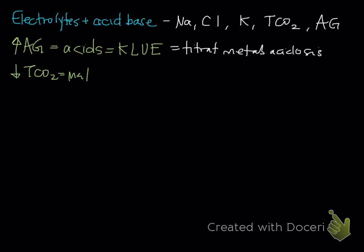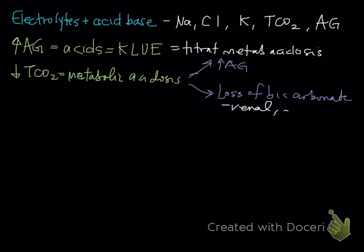Some people start with TCO2 because a TCO2 decrease can be due to different things. One is titrational metabolic acidosis, supported by the increase in anion gap. The other is a loss acidosis where you have a loss of bicarbonate. That loss of bicarbonate can be through the kidneys, especially acute kidney injury.